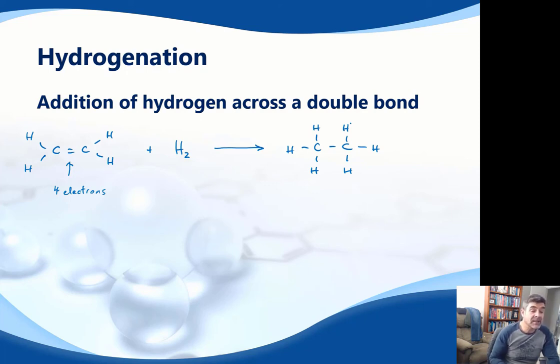Generally speaking, a catalyst is used to help facilitate this process, usually something like platinum or palladium, and we can identify that by just putting it above the arrow in our reaction.